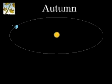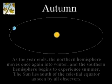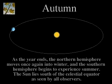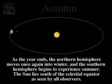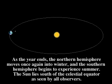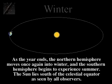As the year ends, the Northern Hemisphere moves once again into winter, and the Southern Hemisphere begins to experience summer. The Sun lies south of the celestial equator for all observers.